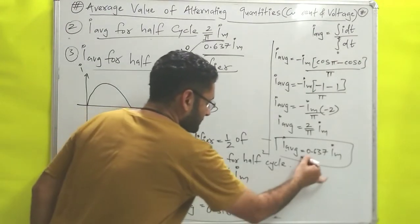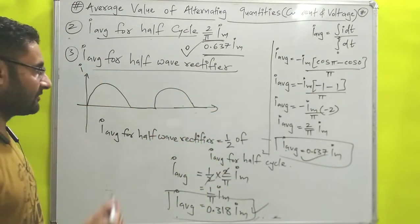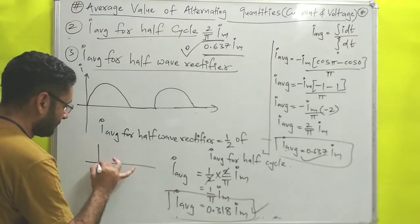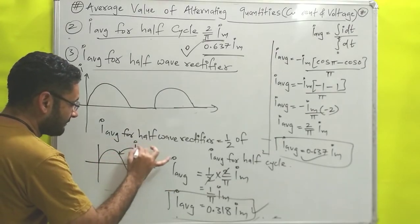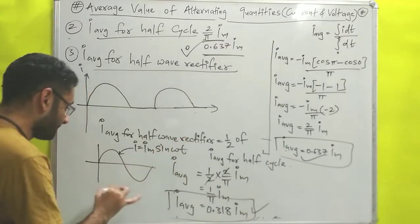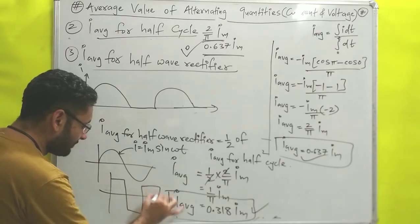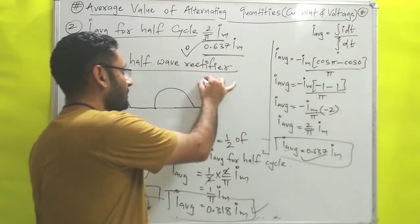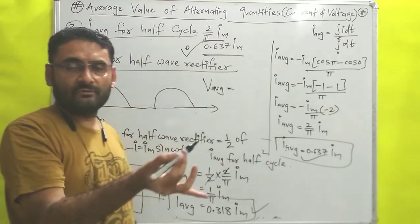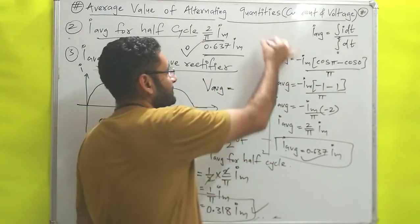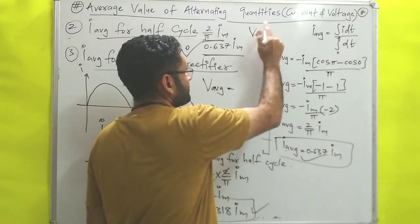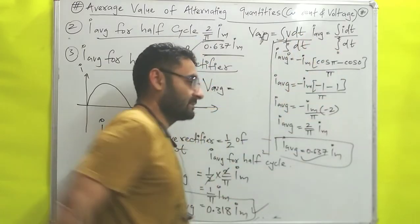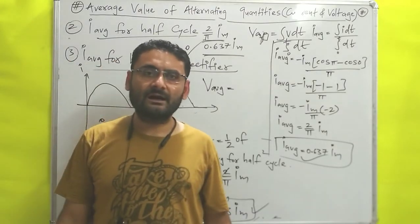Remember: these values for full cycle, half cycle, and half wave rectifier are valid only for a sinusoidal wave, i.e., only when the equation is I = Im sin(ωt). If the waveform is a square wave, these values are incorrect. Similarly, you can find V average for half cycle, full cycle, and full wave rectifier using V_avg = ∫V dt / ∫₀ᵀ dt. That brings us to the end of this video — read hard, work hard, thank you very much.